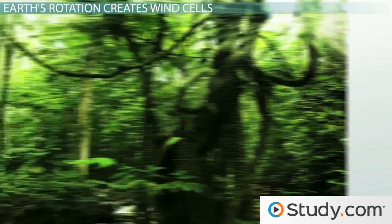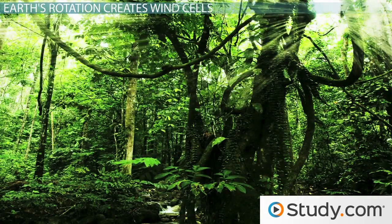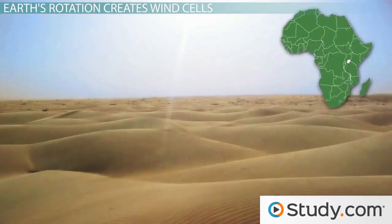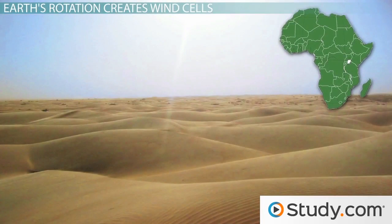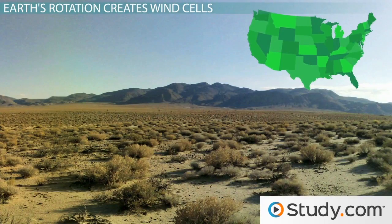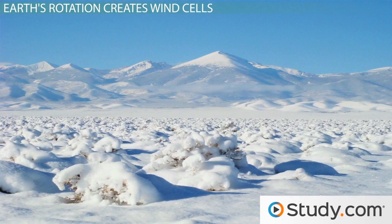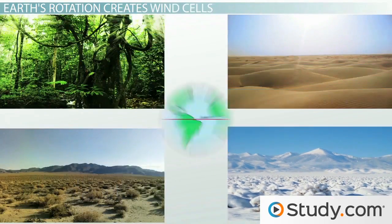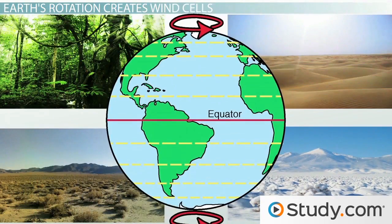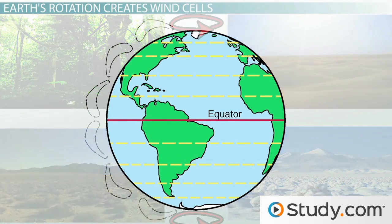The doldrums are also related to the rainforests along the tropics, the Sahara Desert in Africa and Mojave Desert in the southwest U.S., as well as the frigid winds of the polar regions. These all come about because Earth spins on its axis, which deflects straight-moving winds and creates multiple cells of air circulation across the globe.